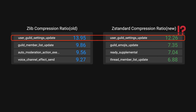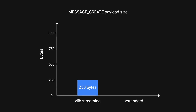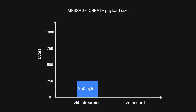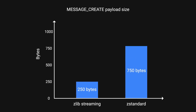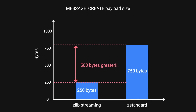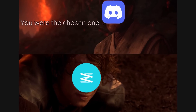They also looked at the average size of compressed payloads. For message create payloads, Zlib compressed them to around 250 bytes, while ZStandard resulted in over 750 bytes. These are really bad results and not what the team had anticipated at all.